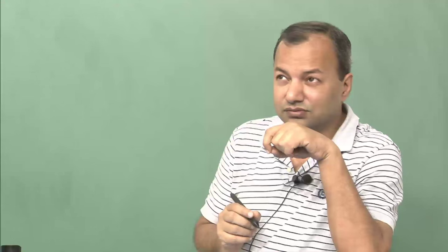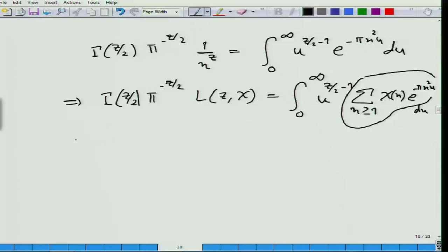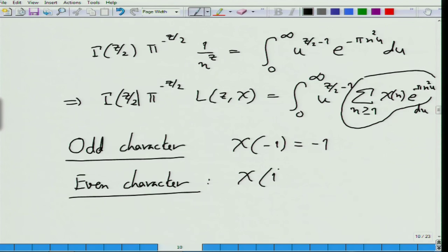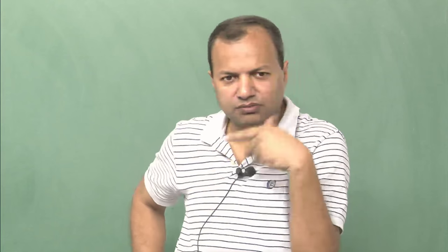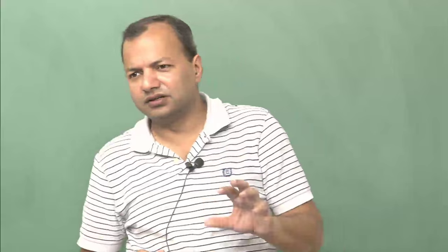There is one minor difference that we will encounter as we do the analysis, so we will have to handle it slightly differently. Let me split the characters into two types based on chi of minus 1. These are the only two possibilities for a character: chi of minus 1 maps to either minus 1 or plus 1. This follows from the fact that chi of minus 1 squared equals 1, so chi of minus 1 must be plus or minus 1. Depending on which it is, we divide into these two types.